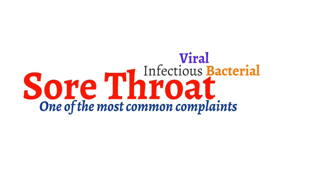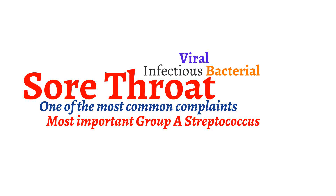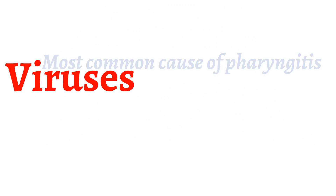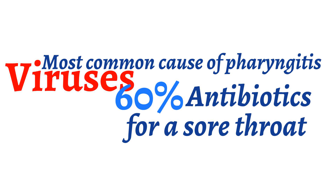One of the most important infectious causes of pharyngitis to identify is group A streptococcus. The reason it is important to identify the cause of pharyngitis is that proper treatment can reduce the risk of acute rheumatic fever, which we will talk about later. Despite the fact that viruses are the most common cause of pharyngitis, 60% of patients receive antibiotics for a sore throat. A better understanding of the causes of pharyngitis will help prevent antibiotic overuse and appropriately treat patients who are at risk for acute rheumatic fever.